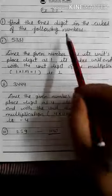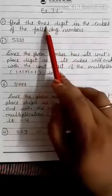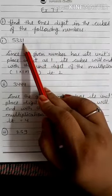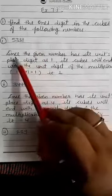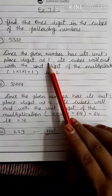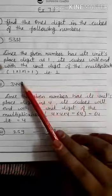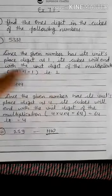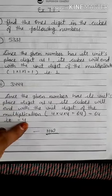Question number 1: Find the once digit (units digit) in the cube of the following numbers. Look at here — 5331: the last unit digit is 1, so the cube will also end in 1. Since the given number has its units place digit as 1, its cube will end with 1 × 1 × 1 = 1. Question number 2: 3444 — last unit digit is 4, so the answer is also 4.